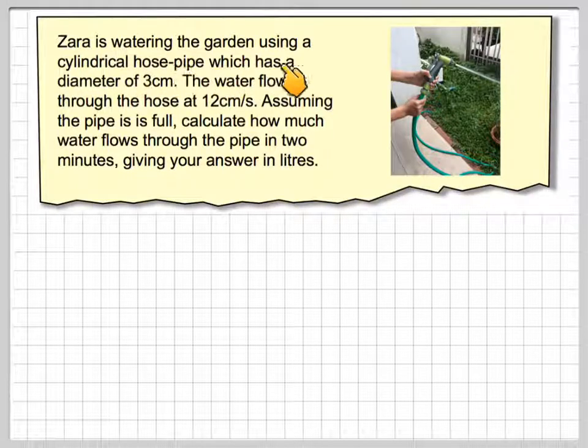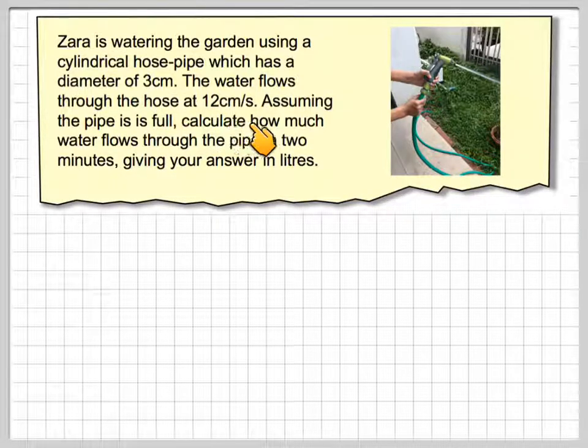Sarah is watering the garden using a cylindrical hose pipe which has a diameter of 3cm. The water flows through the hose at 12cm per second. Assuming the pipe is full, calculate how much water flows through the pipe in 2 minutes, giving your answer in litres.